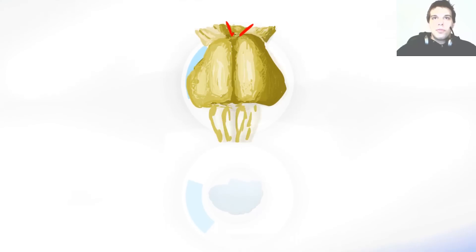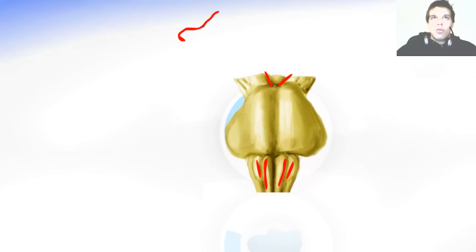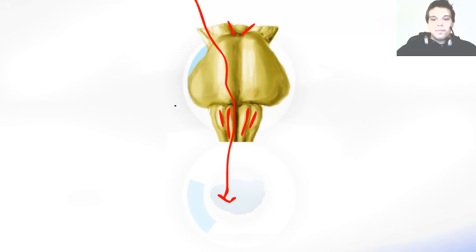Right below that, there are the pyramids of the medulla oblongata and the olivary body. The olivary body consists of nuclei, and the pyramids are the elevations caused by the corticospinal tract. The corticospinal tract means it comes from the cortex of the brain and then goes to the spinal cord. The pyramid is found between two sulci: the anterior median sulcus and the anterolateral sulcus, which is between the olivary body and the pyramid.